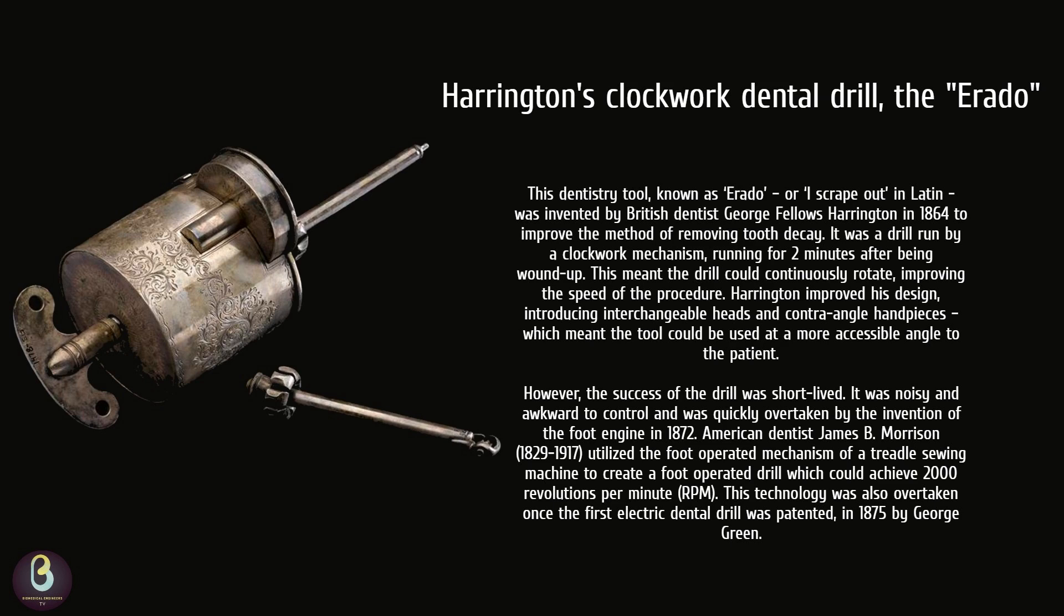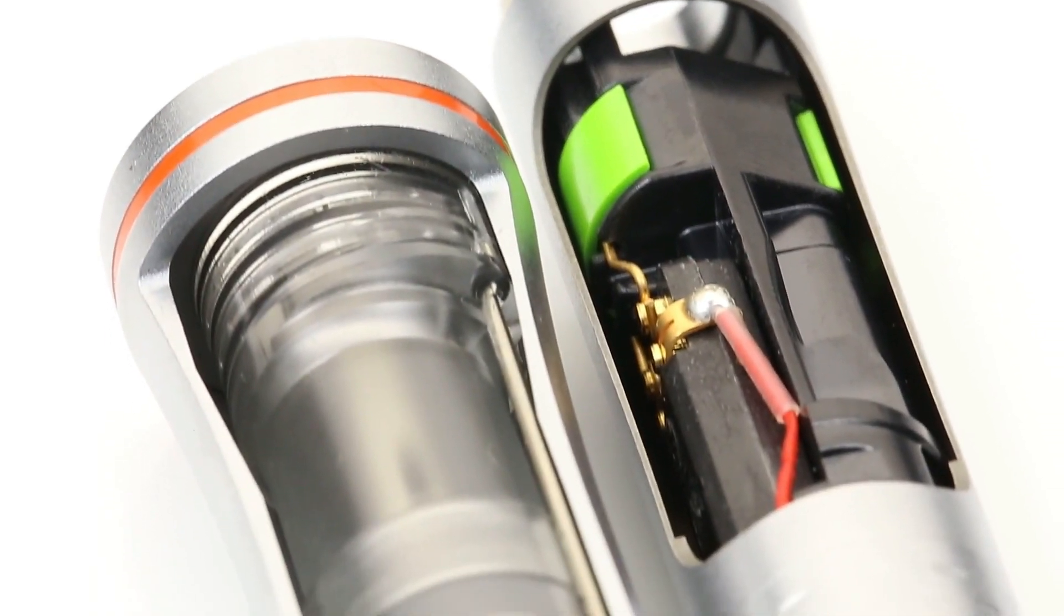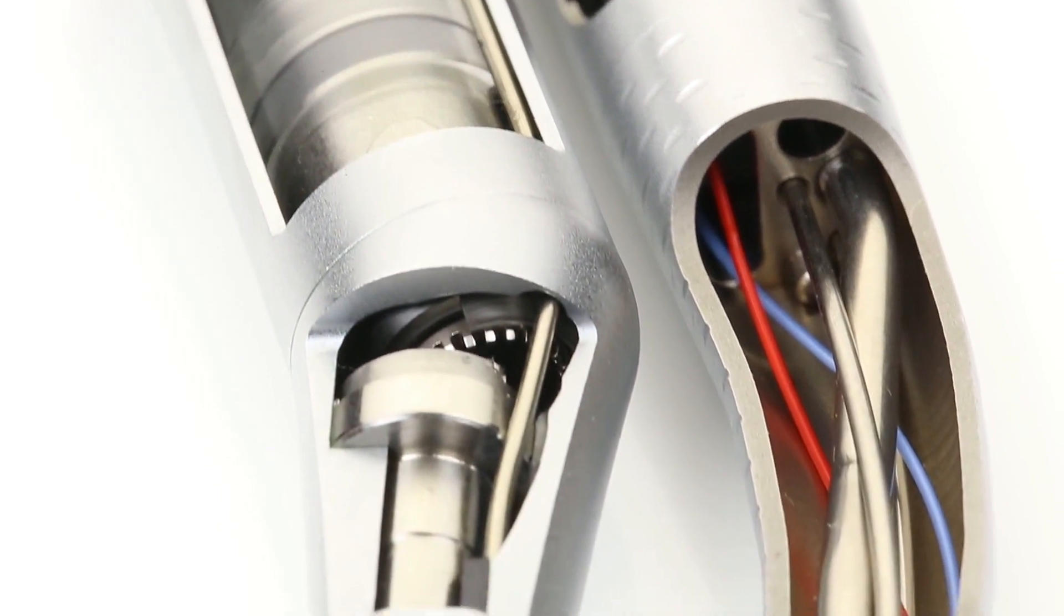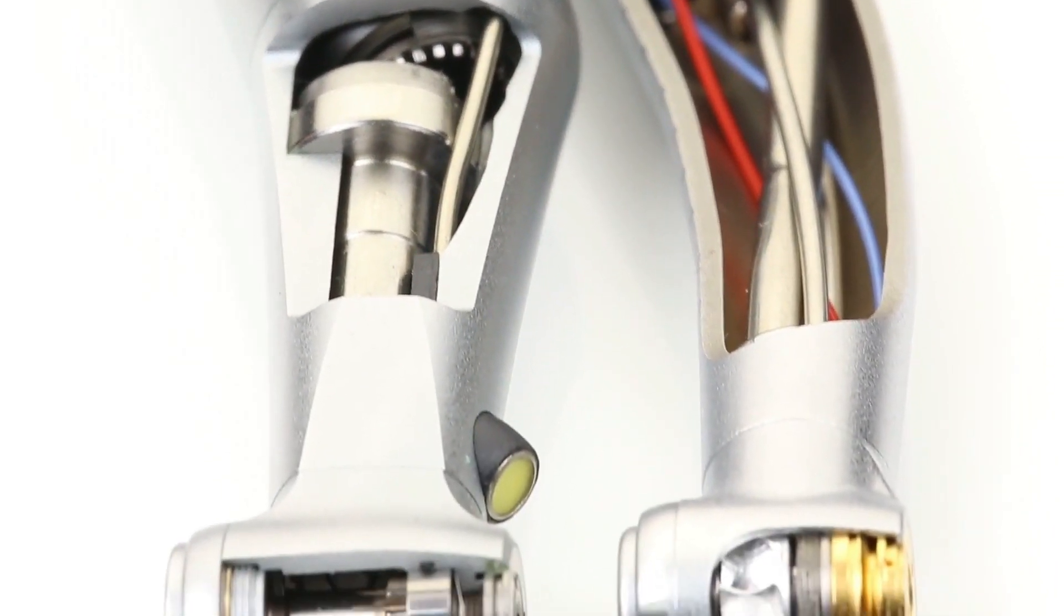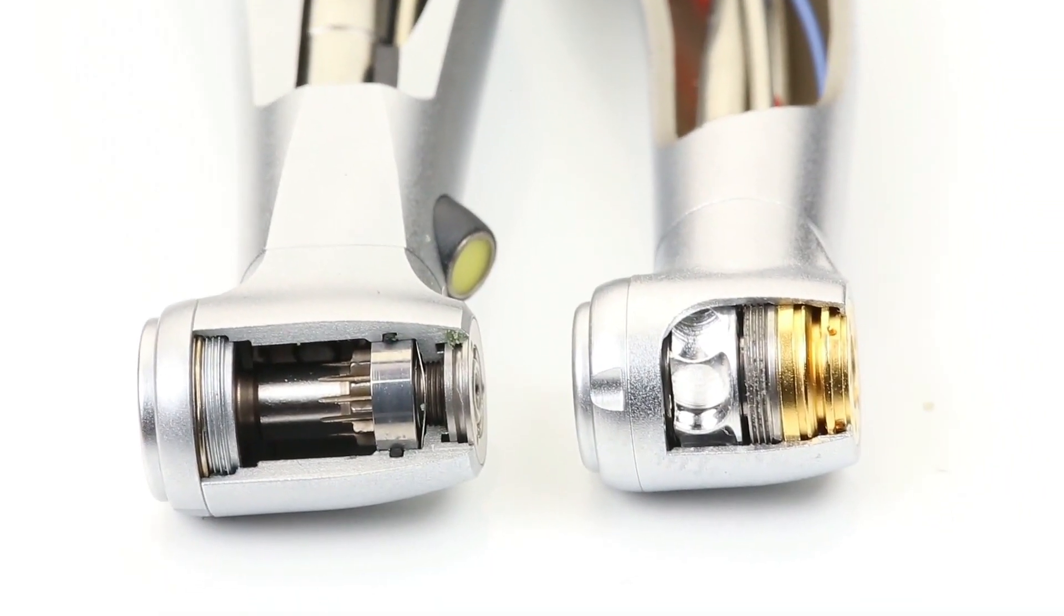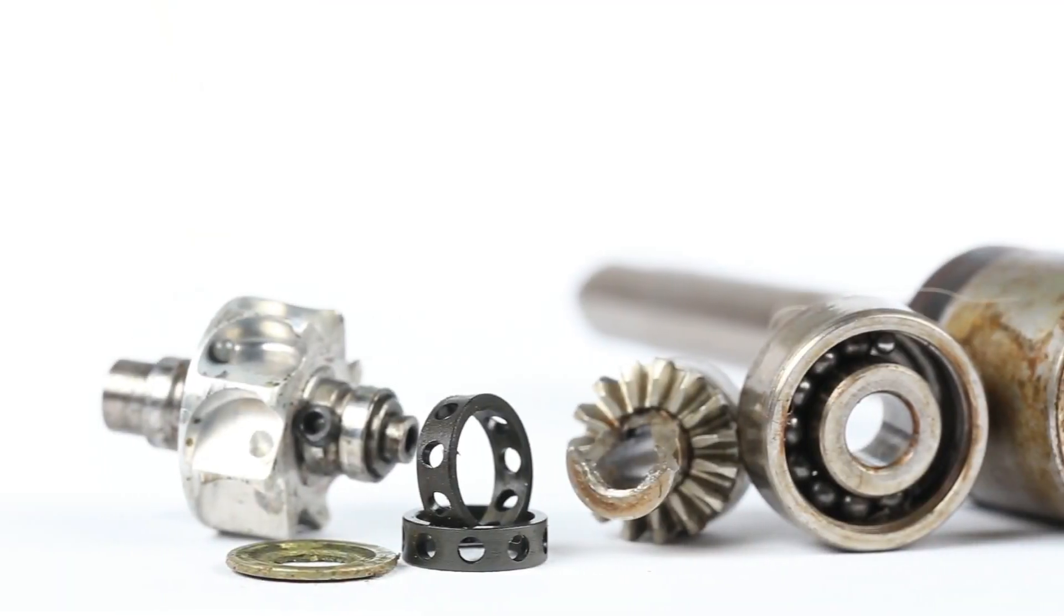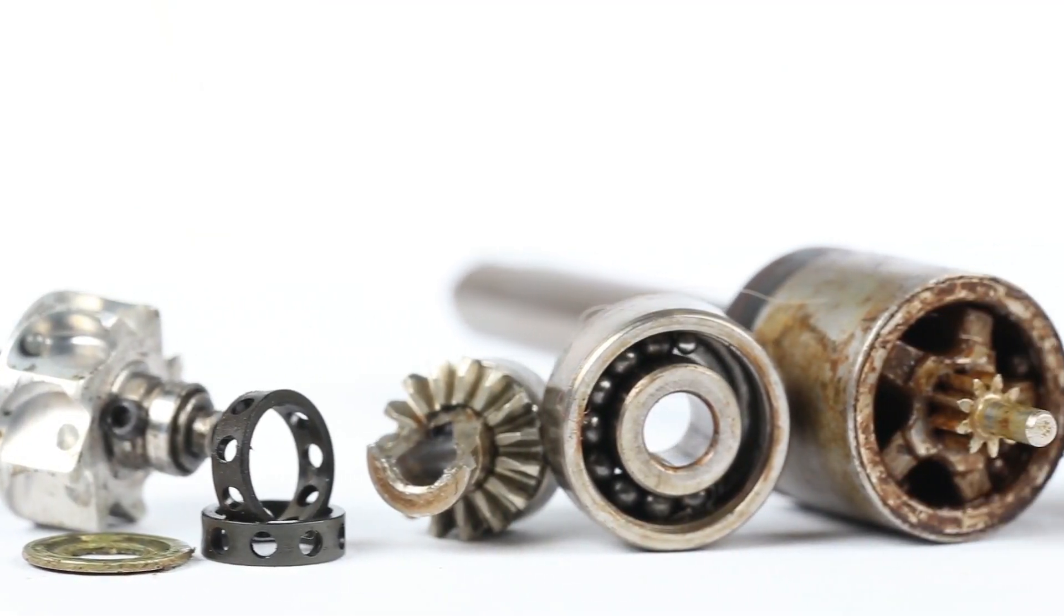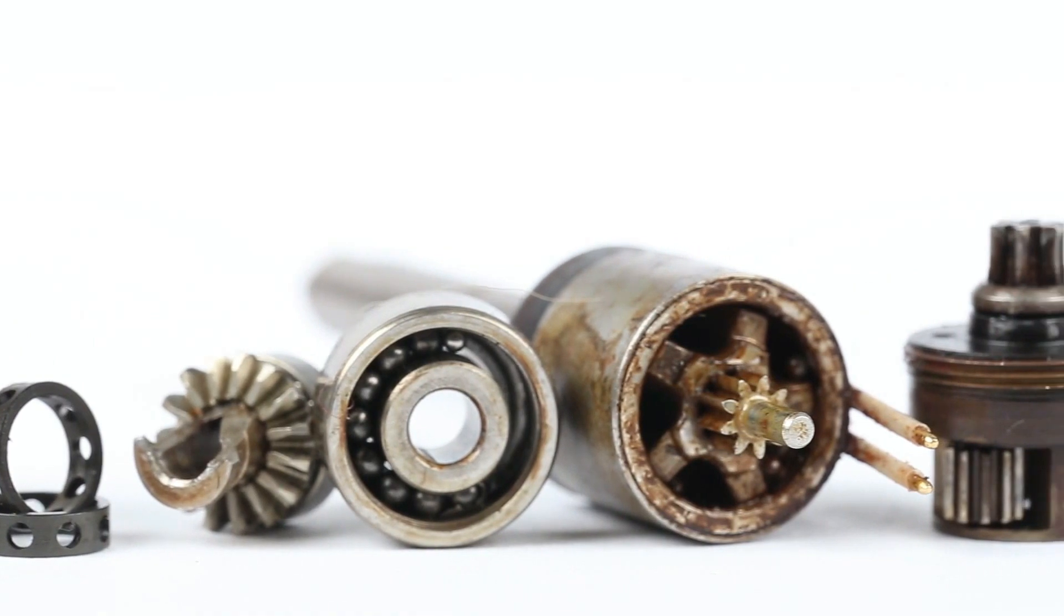The following year, he introduced interchangeable heads and contra angles. Made of silver and richly covered in engraving, this heavy handheld drill resembled a musical box in appearance. During application, it was very noisy. Its popularity was limited with patients and dentists who had awkward control of the instrument. Its already limited appeal was short-lived.